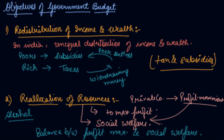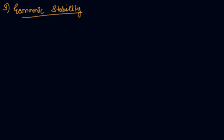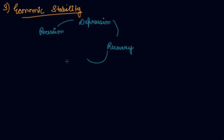The government helps in reallocation of resources. The third objective is economic stability. There is a business cycle we all know — recession, depression, then recovery, then boom, and then again recession. This is the trade cycle which goes on.